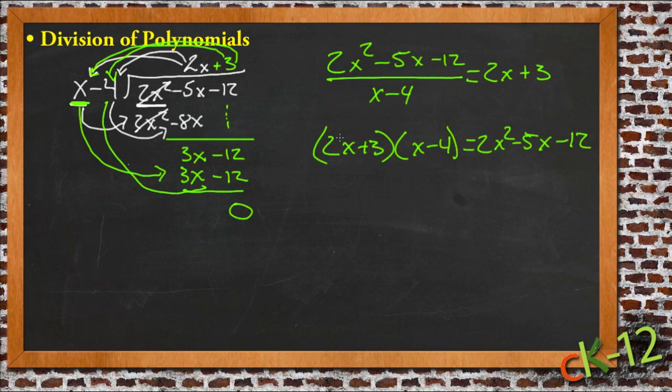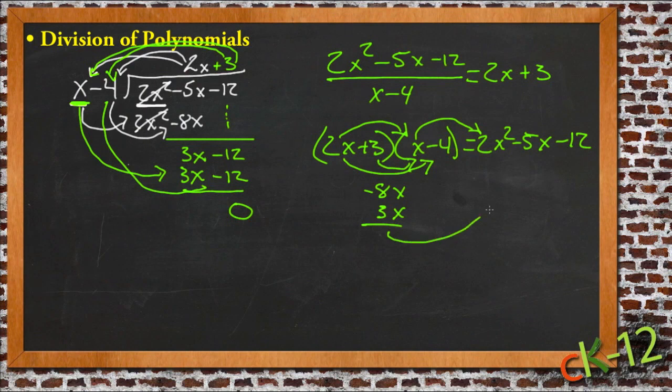And we can see that if we take 2x times x, we get 2x squared. And if we take 2x times negative 4, we get negative 8x, and 3 times x gives us positive 3x. Negative 8x and 3x gives us our negative 5x. And then finally we have 3 times negative 4, and that gives us our negative 12.